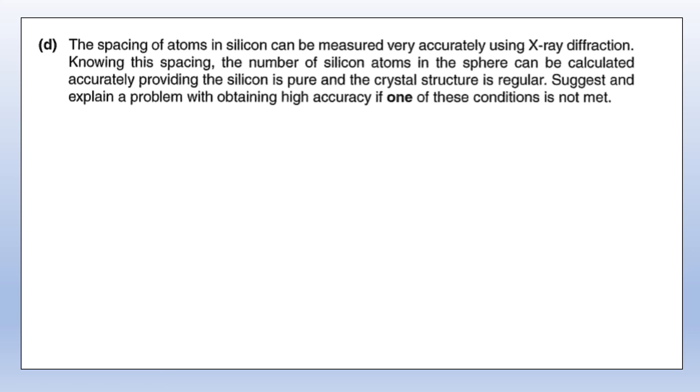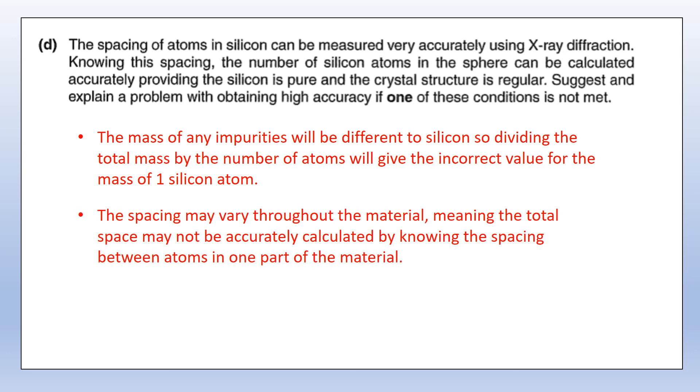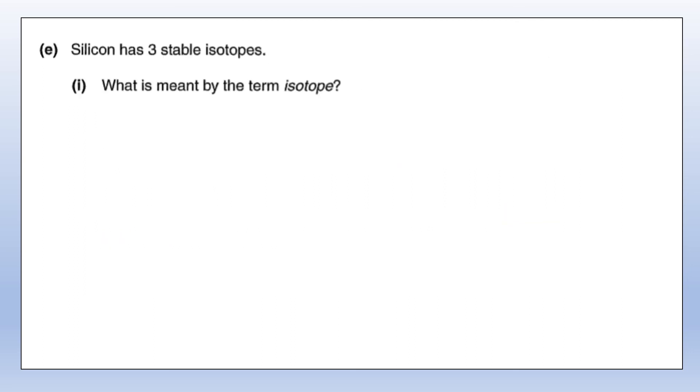One thing we need to do is measure the spacing of the atoms. We can find the spacing by using X-ray diffraction, using the spacings as like a slit in normal diffraction. Now we need to suggest and explain a problem with obtaining high accuracy if one of the conditions is not met. The conditions are that it's pure and the crystal structure is regular. If the substance is not pure and there are some impurities, those impurities are going to have different mass, so if you get the total mass and divide by the number of atoms, that will give you the wrong mass for one silicon atom. If it's not regular, when we use X-ray diffraction to find the spacing, we assume that spacing is consistent, and if it's not, that's going to give you the incorrect value for the mass of an atom.